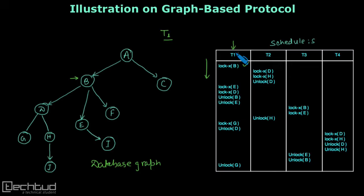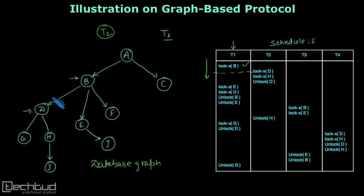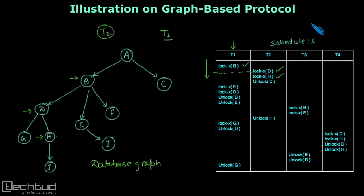After this first lock by transaction T1, transaction T2 starts. We have the operation lock X on D by transaction T2, on database item D. This is the first lock by transaction T2, so it is granted. Then, an exclusive lock on H — H's parent is already locked, so we can grant the lock on H. This is also granted. Then unlock D: in graph-based protocol, unlocking can be done at any point of time, so D is unlocked.